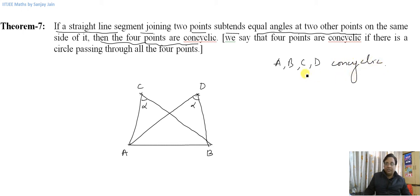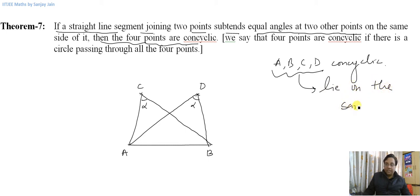In other words, we can say A, B, C, and D lie on the same circle.